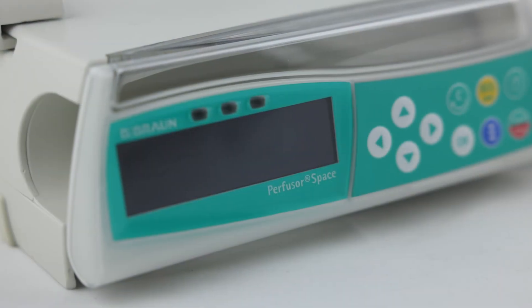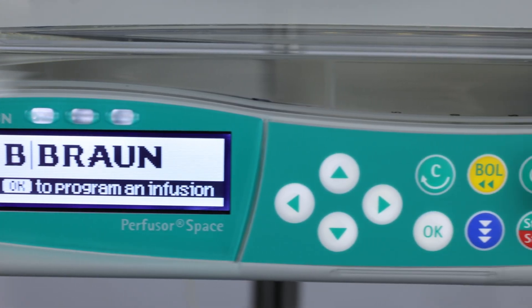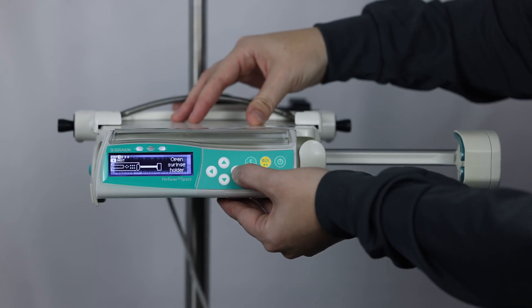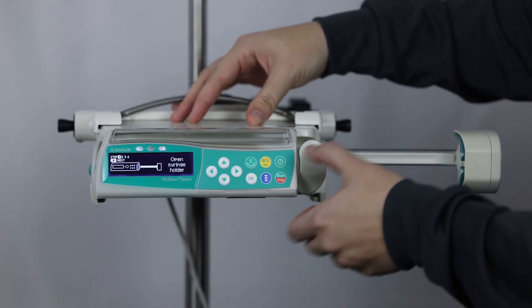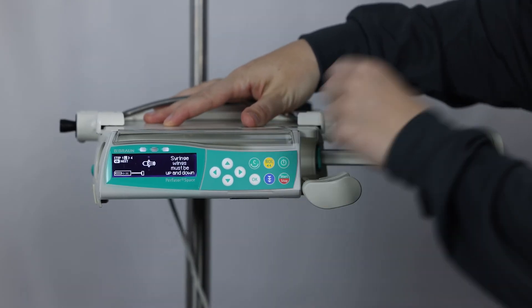The Perfuser Space syringe pump manufactured by B. Braun is intended for use on adults, pediatrics, and neonates for infusions or enteral nutrition. This is an excellent pump for transporting patients and is cleared by the FDA for both ground and air transport. It is small, lightweight, and is primarily used in hospitals.